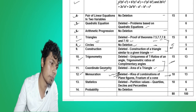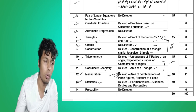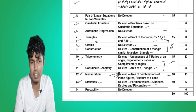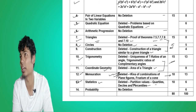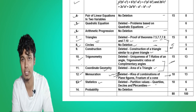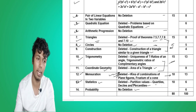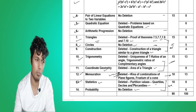Chapter number thirteen is Statistics. From Statistics, the deleted portions are partition values, quartiles, deciles, and percentiles. It means they are going to ask only mean, median, and mode — only these three topics are left from this chapter. Chapter number fourteen is Probability — from Probability there is no deletion. These last two chapters comprise ten marks — mostly probability carries four marks and statistics six marks most of the time.